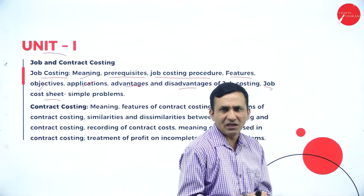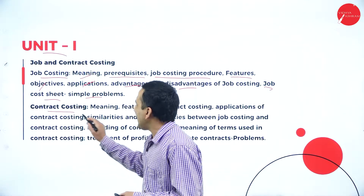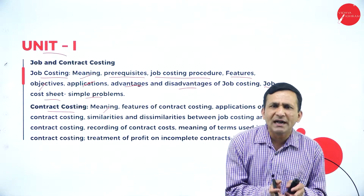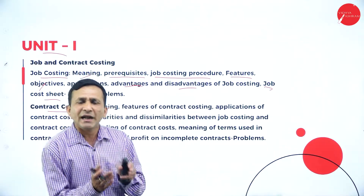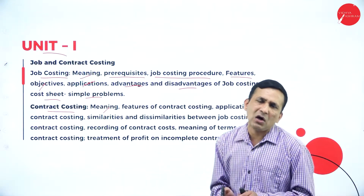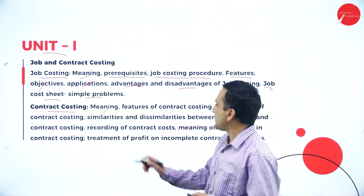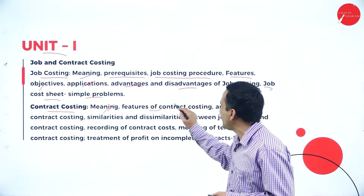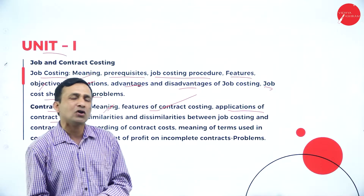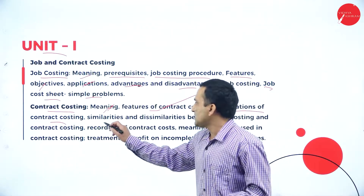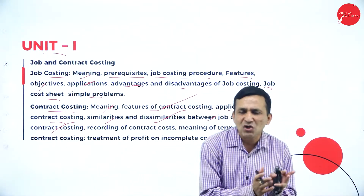A job cost sheet will be covered — in the last semester you studied only a simple cost sheet, so here a job-related cost sheet with simple problems will be solved. For contract costing, the meaning covers any contract in the construction industry, what specific contracts are undertaken, and the two major persons involved in contracting.